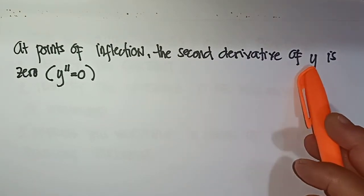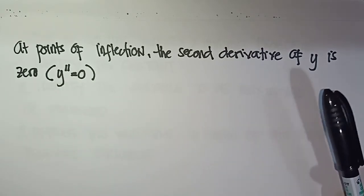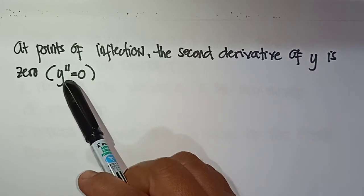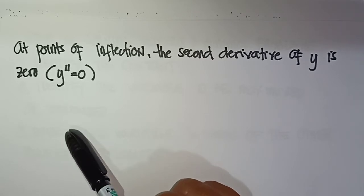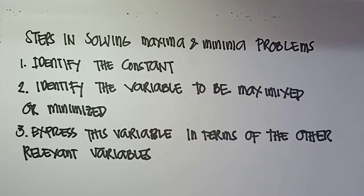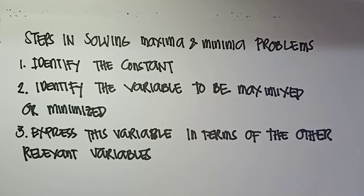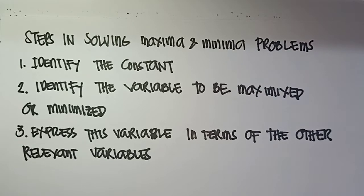At the point of inflection, the second derivative of y is zero, so y double prime equals zero. y prime represents the first derivative. Now, here are the steps in solving maxima and minima problems: Step 1 — identify what is constant in the given problem. Step 2 — identify the variable to be maximized or minimized.